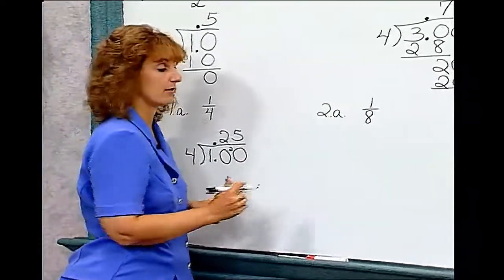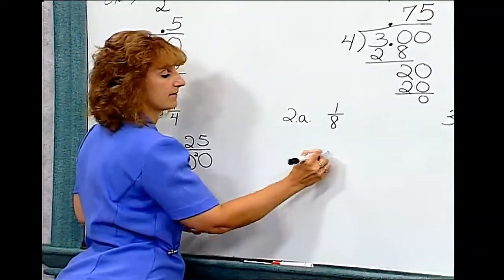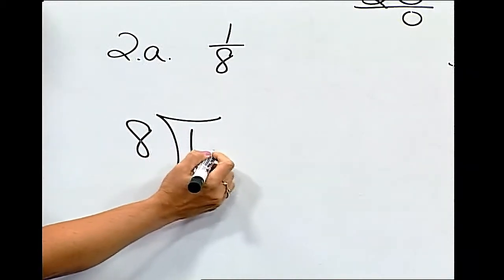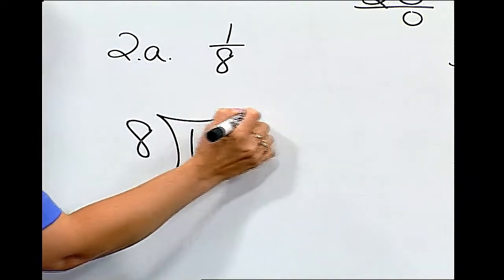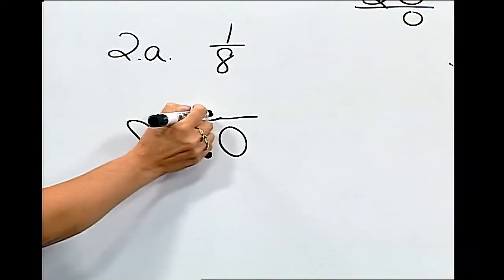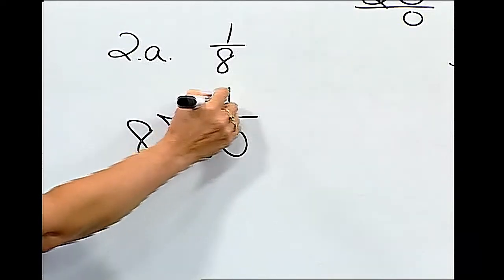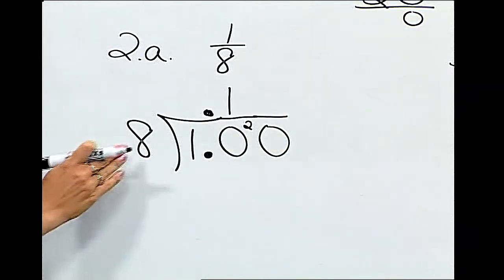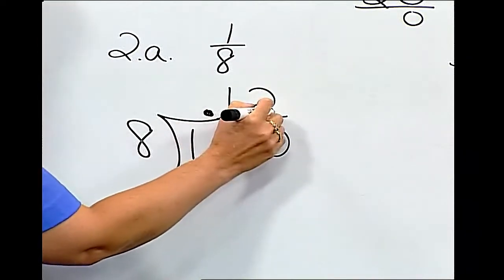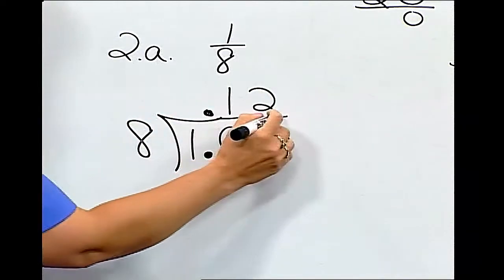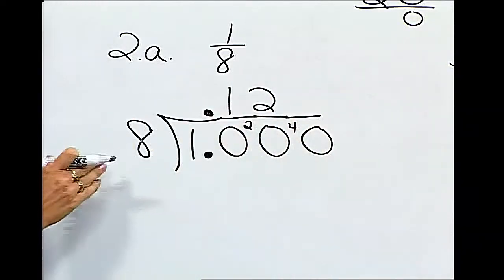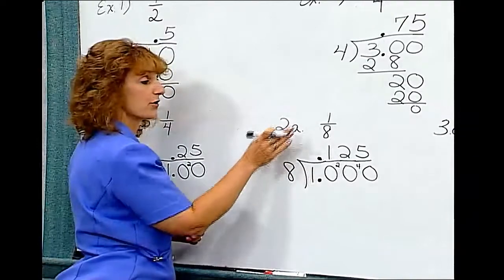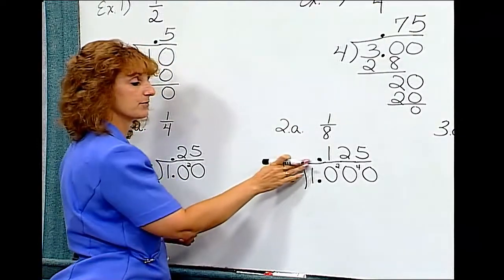If I look at the next example, let's change 1/8 into a decimal. 1 divided by 8. Once again, we need a decimal point and a 0. The decimal point comes straight up. 8 goes into 10 1 time with 2 left over. So I'll place another 0 there. 8 goes into 20 2 times and now there's no remainder. So we have 1/8 is equal to 0.125.